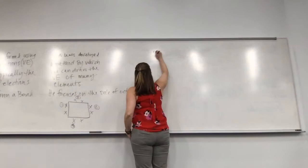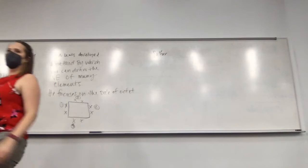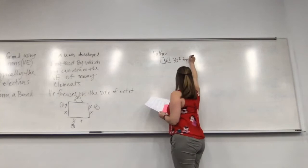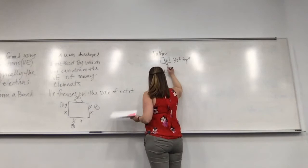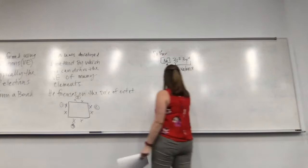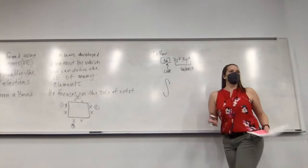Let's look at sulfur. Its electron configuration is [Ne] 3s² 3p⁴. Neon is the core, and there are six valence electrons. To draw the Lewis dot structure of sulfur, we put S in the middle and then place six electrons around it.